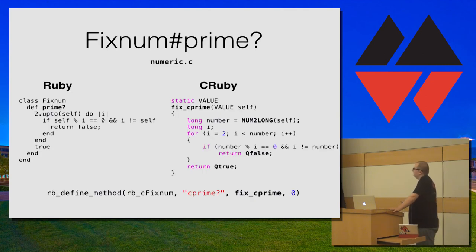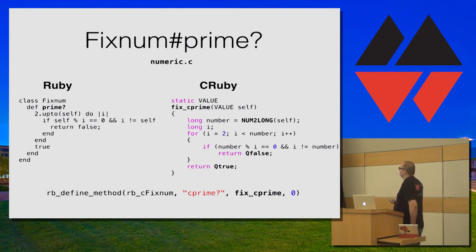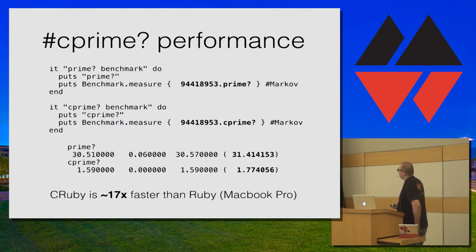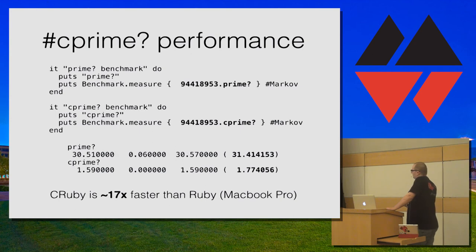That's another example — fixnum prime. Just to reiterate what we've done: this is how you would do it in Ruby, this is how you would do it in C, and this is the CRuby-ready version. Yet again, it returns VALUE (a reference to an object), it takes a reference to self, we do conversions from Ruby to C types. Here we use the constants Qfalse and Qtrue, which are basically singletons for Ruby false and true. This is how we bind them to fixnum. The comparison is easy: in Ruby it takes 30 seconds, if you rewrite it in CRuby it takes less than 2 seconds — so C Ruby is 17 times faster.